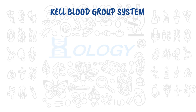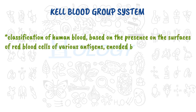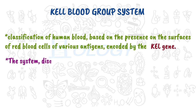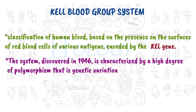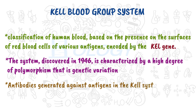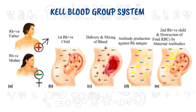The Kell blood group system is the classification of human blood based on the presence on the surfaces of red blood cells of various antigens encoded by the Kel gene. The system, discovered in 1946, is characterized by a high degree of polymorphism — that is, genetic variation. Antibodies generated against antigens in the Kell system can cause transfusion reactions and erythroblastosis fetalis. After the Rh and ABO systems, the Kell system is the third most common blood group to cause these reactions.